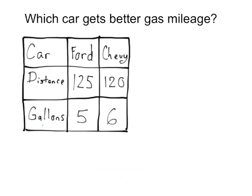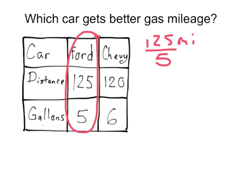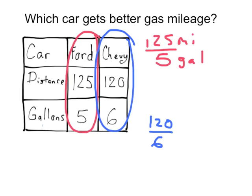Which car gets better gas mileage? So we have a Ford car that gets 125 miles, 5 gallons. And we have a Chevy car that gets 120 miles on 6 gallons.